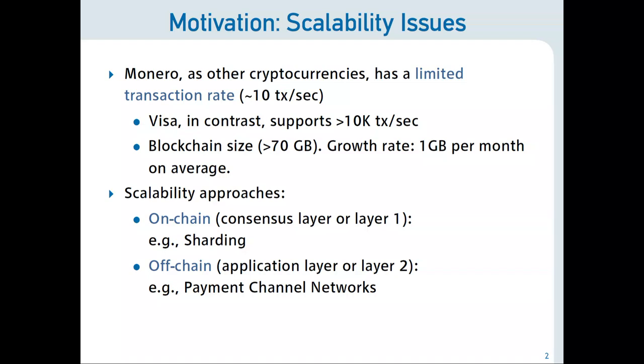For most of you, it's not a surprise if I say that Monero has a scalability issue, as many other cryptocurrencies today. The permissionless and decentralized consensus algorithm limits the transaction rate to a ballpark of 10 transactions per second. This is way lower than what we would need if Monero is going to cater to a growing number of users and transactions, where systems like Visa support around more than 10,000 transactions per second.